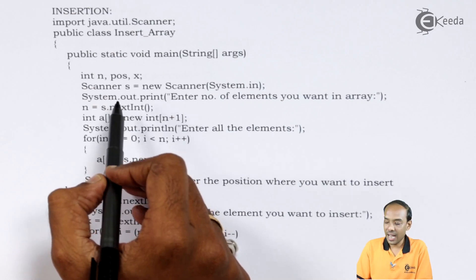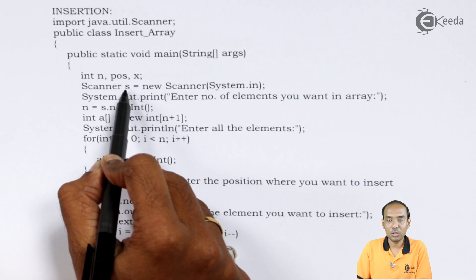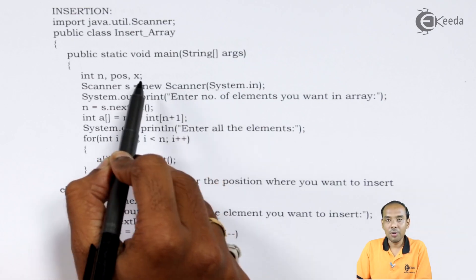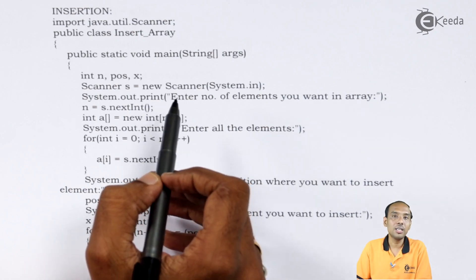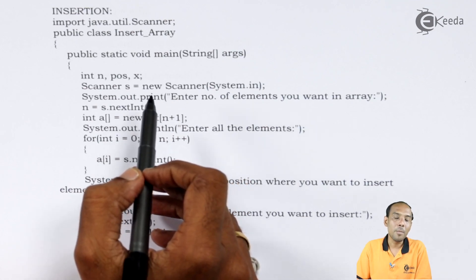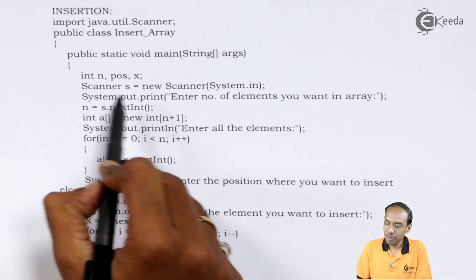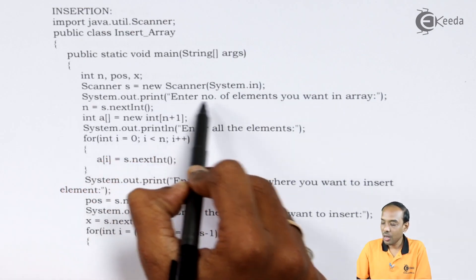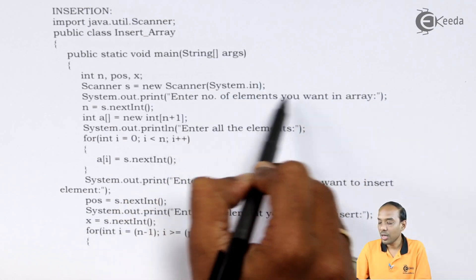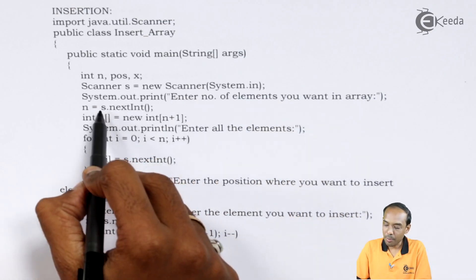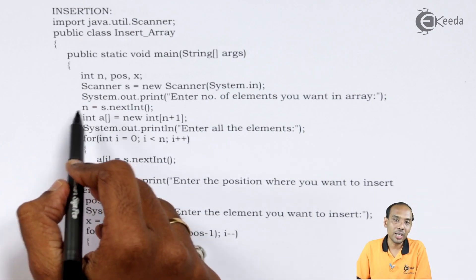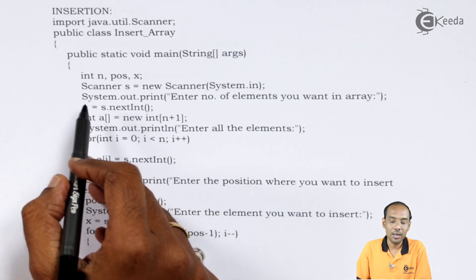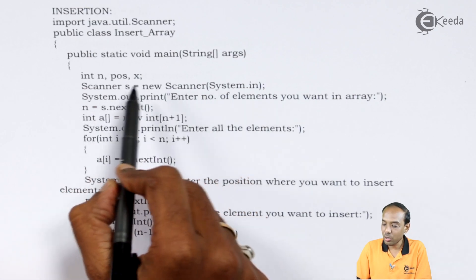We are going to use a Scanner class object called s to get values from the user. First I need to define the size of the array, which is taken from the user. So we give the message: 'Enter number of elements you want in array.' Then the statement becomes n equal to s.nextInt(). Using the scanner class object s, I take the number of elements the user wants and store it in n, so n is used as the size of the array.